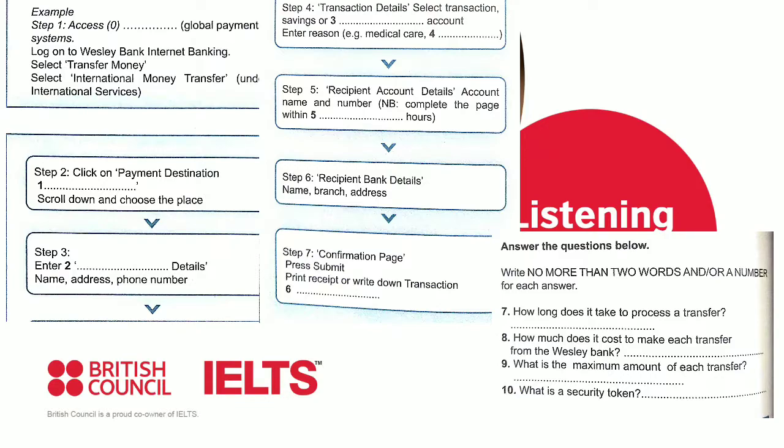So this is where I select the account that the money comes out of? Yes. You have a transaction account, a savings account and a business account. Which one did you want to choose? It had better be my savings account. Okay, have you clicked on that? Yes. But next it says enter a payment reason. Why do I have to give a reason? I'm afraid that's a legal requirement. You can't send money overseas without a valid reason.